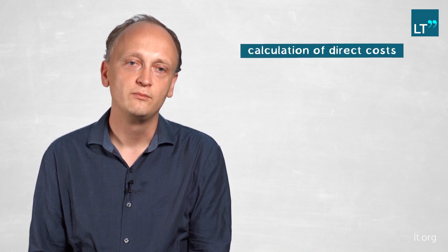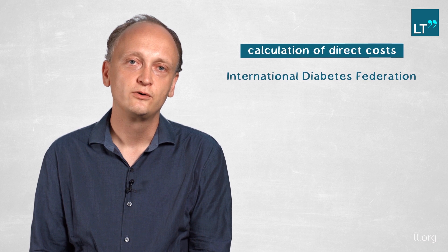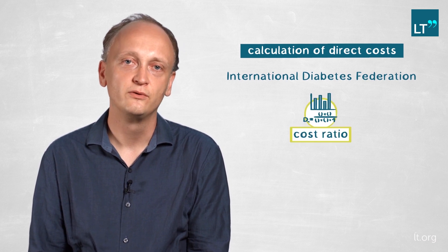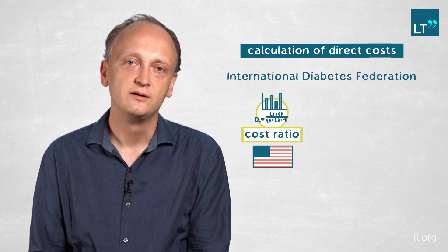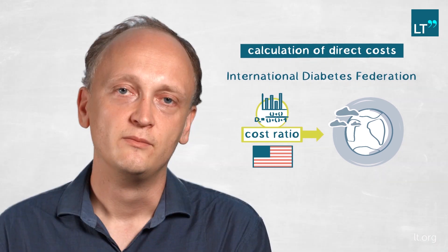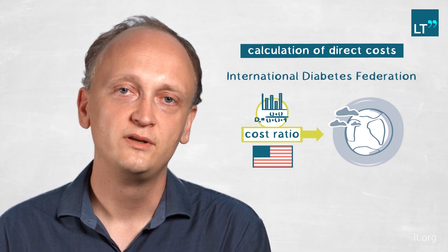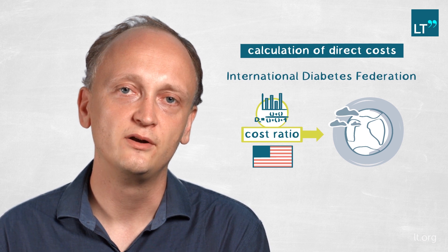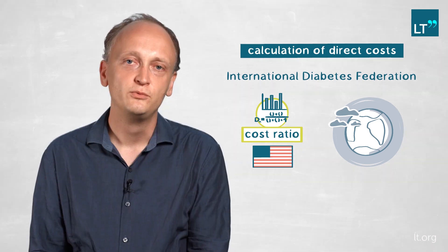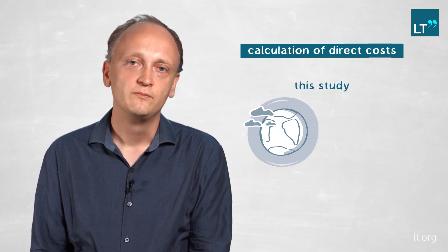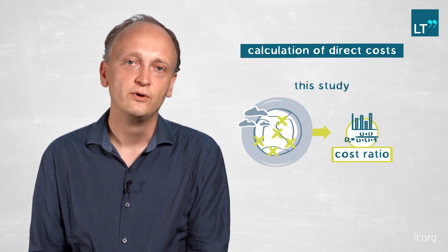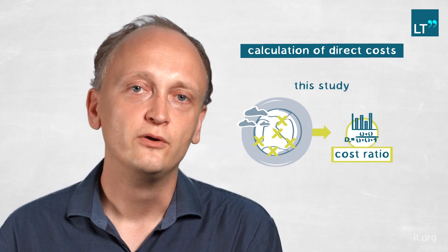Unfortunately, such data does not exist. Therefore, a second best approach is used. The status quo was done by the International Diabetes Federation, where they took cost ratios of diabetics relative to non-diabetics from the United States and multiplied health expenditure in all countries with these cost ratios, thereby assuming that diabetes expenditure in high-income and low-income countries followed the same pattern as in the United States. The contribution of our study was that we calculated these cost ratios for different regions of the world and no longer assigned the United States cost ratio to India, for instance. Otherwise, we followed the same approach by enriching the basis that was implemented.